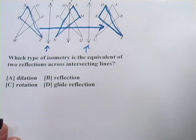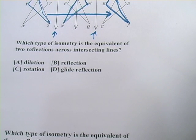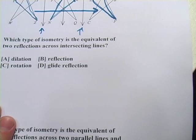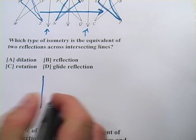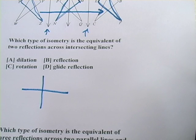All right, let's look at this next one. It says, which type of isometry is the equivalent of two reflections across intersecting lines? So let's take a look at that. I'm going to draw a picture just to help myself visualize it. So here's a line. Here's a line. I'm going to intersect them at 90 degree angles.